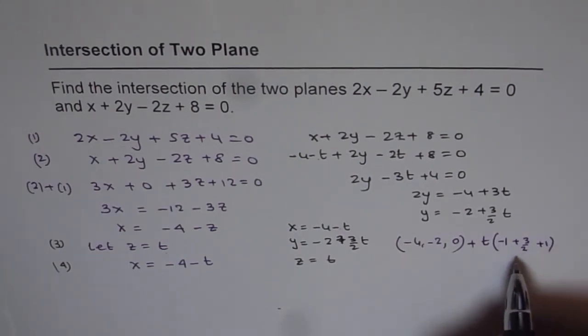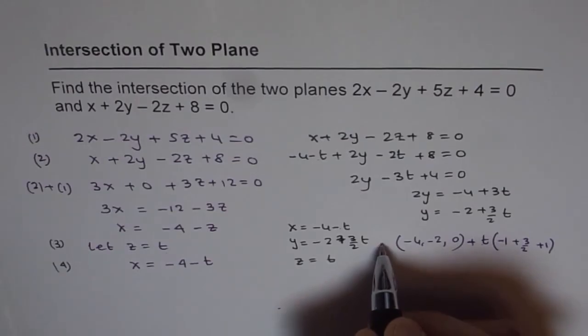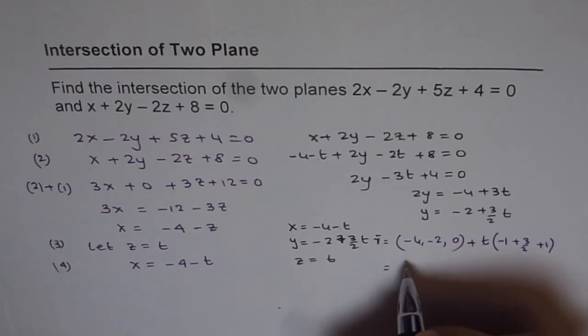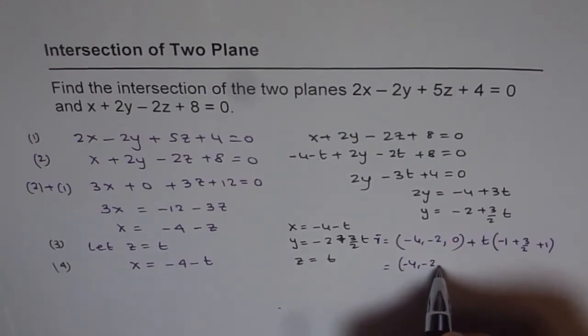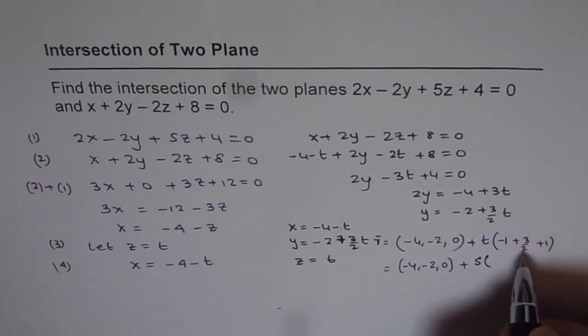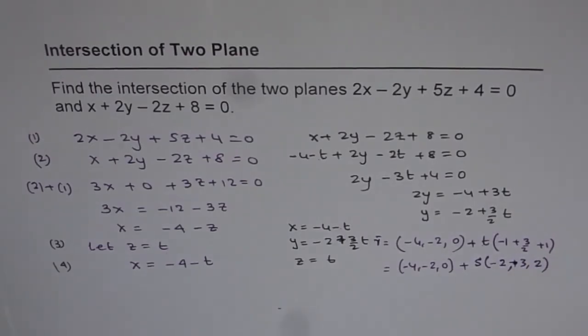In such cases, it's good to multiply by 2 to avoid fractions. The equation of the line is (-4, -2, 0) + t(-1, 3/2, 1). Multiplying the direction vector by 2, we get (-4, -2, 0) + t(-2, 3, 2). This is our solution for the intersection of the two planes.